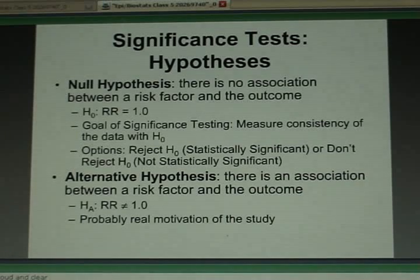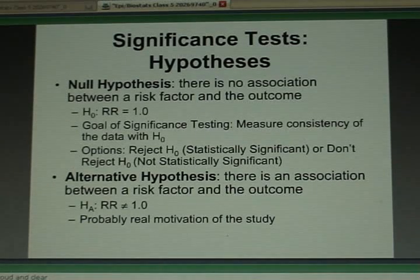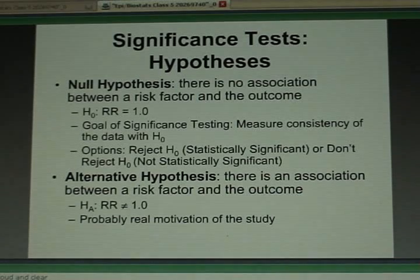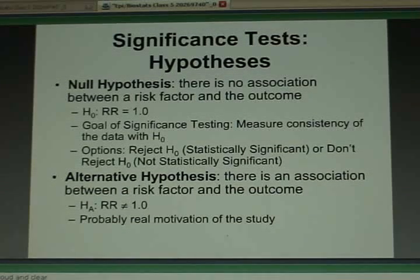They also thought that this drug metformin might prevent disease from occurring. So probably the motivation for doing this study was the hope that the alternative hypothesis might be true. That the true risk ratio is not one, but different from one.